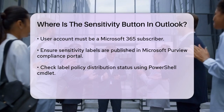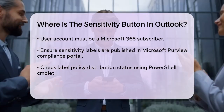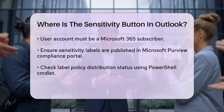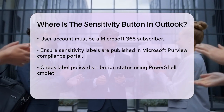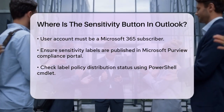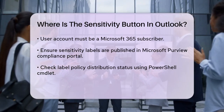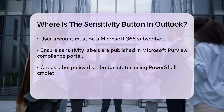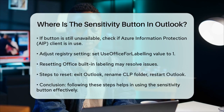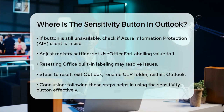If the Sensitivity button is still not available, it might be because Outlook is using the Azure Information Protection client instead of the built-in labeling. You can fix this by adjusting a registry setting. Navigate to the HKEY_CURRENT_USER\Software\Microsoft\Office\16.0\Common\Labels registry sub-key and set the UseOfficeForLabeling value to 1.